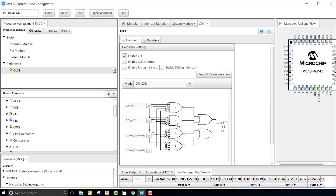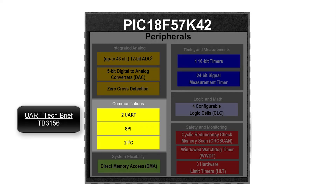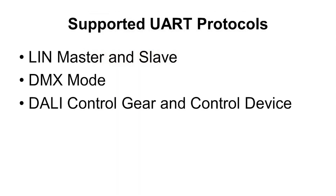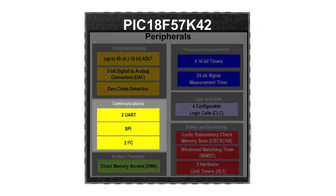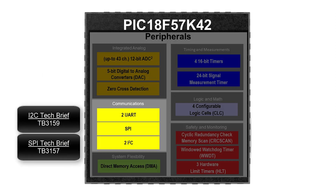Core independent peripherals for serial communication on the PIC 18F57K42 include UART with support for asynchronous protocols such as LIN, DMX, and DALI. In addition, the PIC 18F57K42 also features higher speed, standalone I2C and SPI communication peripherals.